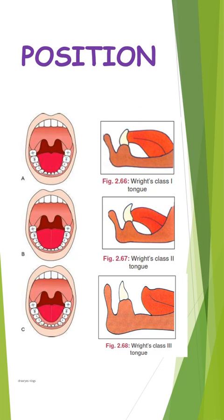Next, coming to the position of the tongue — the position of the tongue greatly affects the ability of a patient to successfully wear a complete denture. According to Dr. C. Wright, tongue position is classified into 3 classes: Class 1, Class 2, and Class 3.